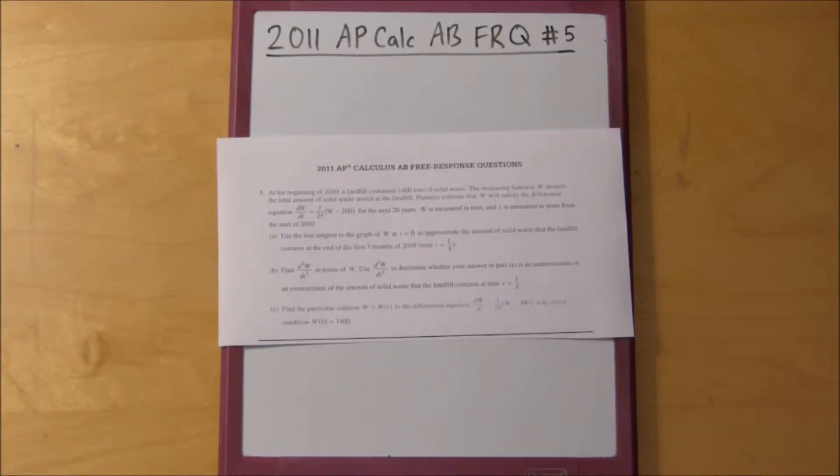We've got this landfill, and this landfill has 1400 tons of solid waste at time equals zero. So the first question asks us to use the line tangent to the graph of W at t equals zero to approximate the amount of solid waste at the end of the first three months of 2010, so time t equals one-fourth. So what we're going to have to do is we're going to have to first find the line tangent to the graph. Anytime it says use this line and it doesn't provide it in the question, that means you have to find it yourself.